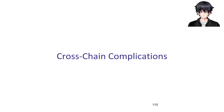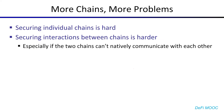Welcome back. This is segment 5: Cross-Chain Complications. As we've seen so far, securing a protocol on a single chain is hard, and it follows that securing a protocol that rests on multiple chains is even harder. This is especially true when the two chains can't even natively communicate with each other.